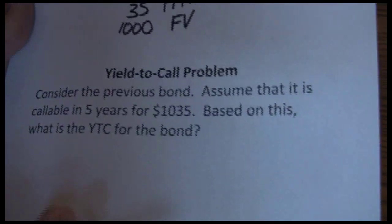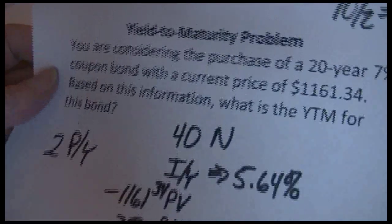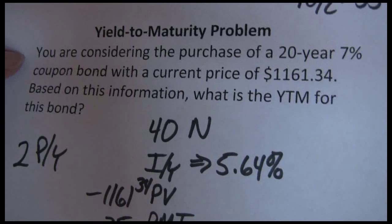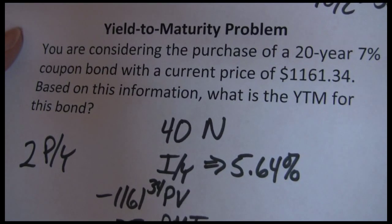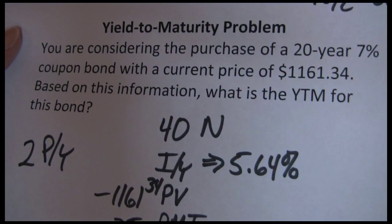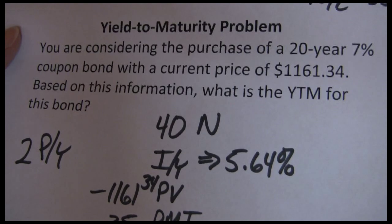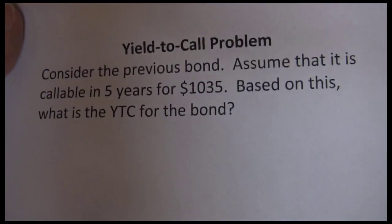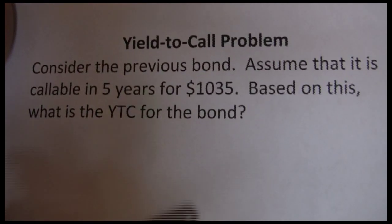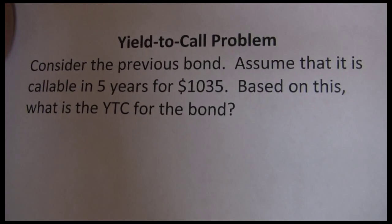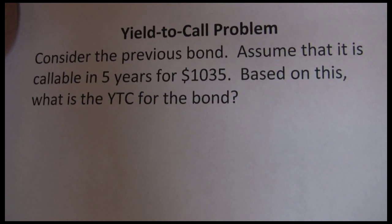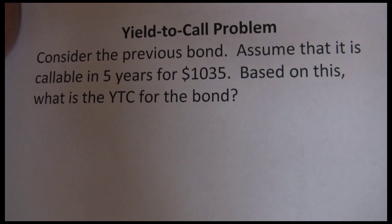In our example here, we're going to use the same bond from previously — our 20-year 7% coupon bond that had the price of $1,161.34. And now we're going to allow this bond to be callable. Assume that the bond is callable in five years for $1,035. Based on that, we want to find the yield to call for this particular bond.